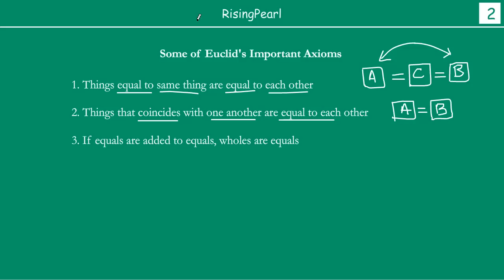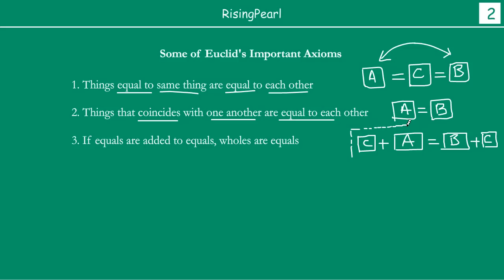Then the next axiom was: if equals are added to equals, the wholes are equal. So suppose we have A and we know A is equal to B. If you add another thing or object called C to A, and if you add the same thing C to B, then A plus C will be equal to B plus C. Basically, if equals — which is C in this case — are added to equals A and B, your result A plus C is equal to B plus C.